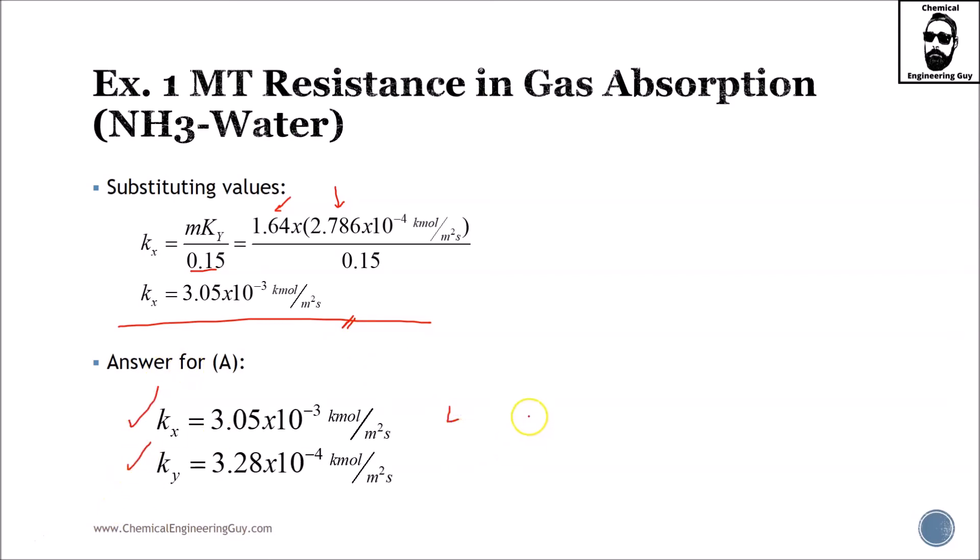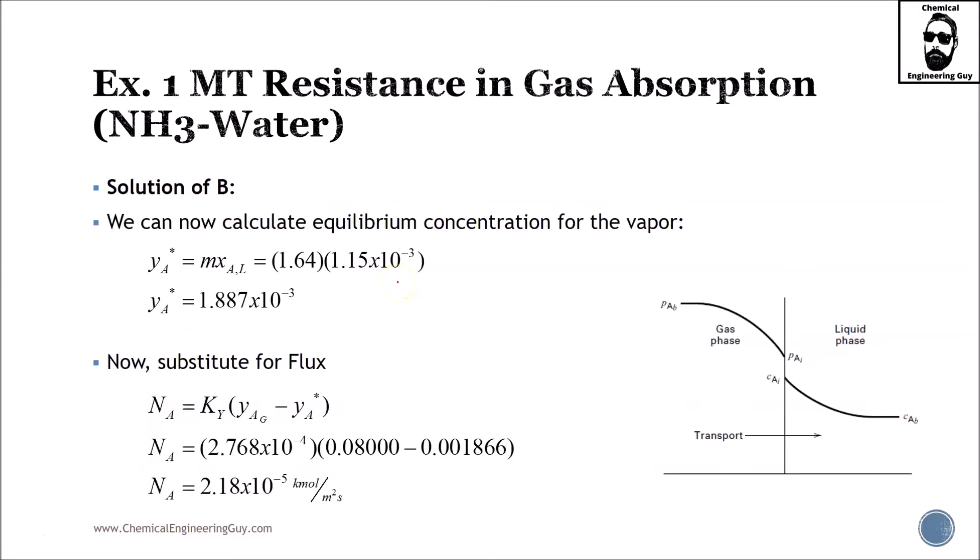We get the two local mass transfer coefficients, liquid and gas phase. Now solution B: we can now calculate the equilibrium concentration for the vapor. Remember what we want to calculate is the flux in the gas phase, which we already know is the same as the flux in the liquid phase. We have molar composition in the bulk phase. Do we have the conditions in the interface? No. We need to use the overall mass transfer coefficient, which fortunately we do have.